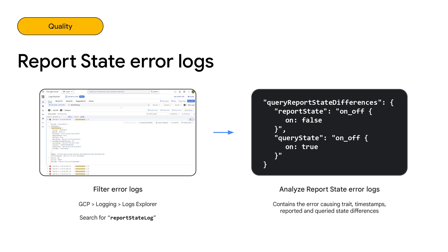Once you get an idea on the metrics for report state, the next step is to troubleshoot the issues using logs. To access these logs from Google Cloud Platform, on the side menu select Logging, then Logs Explorer. Once you identify a sample, you'll notice that it contains fields that help you troubleshoot inaccurate or missing report states. The general approach to troubleshooting across our entire ecosystem is: first, monitor the issues through metrics, then do a deep dive using logs.